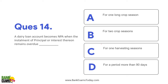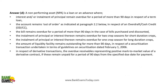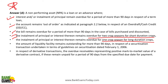A dairy loan account becomes an NPA when the installment of principal or interest thereon remains overdue for 90 days. For agricultural loans specifically: the installment or interest remains overdue for two crop seasons for short-duration crops, or one crop season for long-duration crops. For all other categories, the 90-day concept applies. Please read this slide — it is very important.